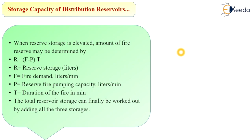In summary, in this lecture we have seen the different layouts of distribution networks — the dead-end system, radial system, Grid Iron system, and ring system — as well as the different methods of distribution: the gravity system, pumping system, and combined gravity and pumping system. We also covered the types of reservoirs — surface or underground reservoir and elevated service reservoir — and the storage capacity of the distribution reservoir, including balancing storage, breakdown storage, and fire storage.